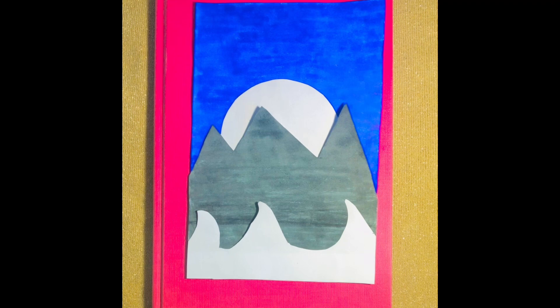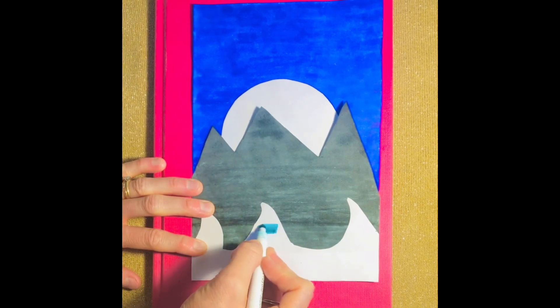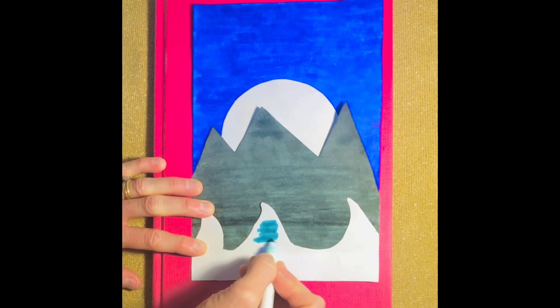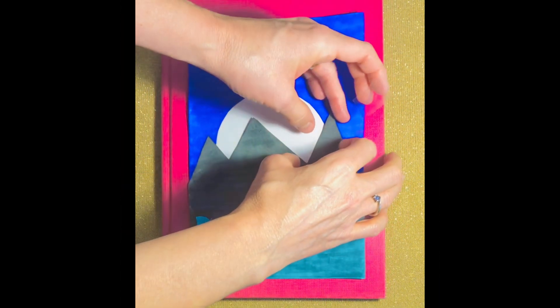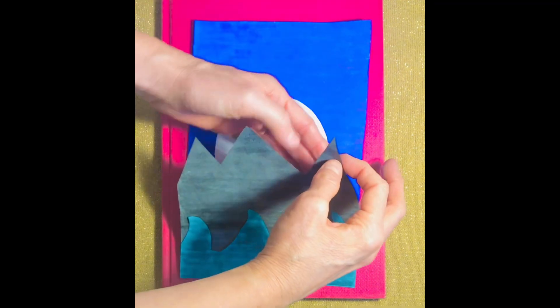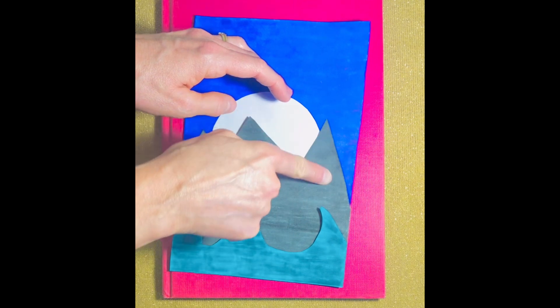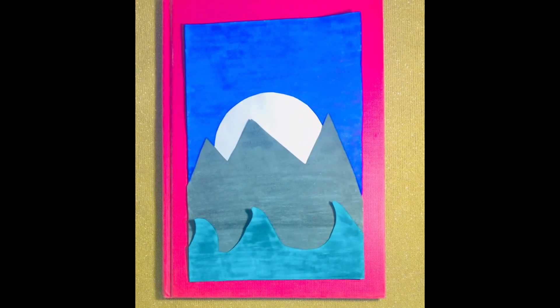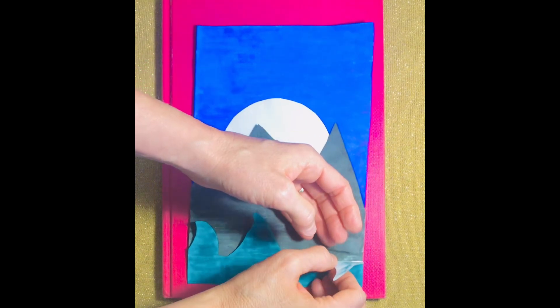I cut my waves out and I sized them to my paper and now I need to color them. I chose this beautiful turquoise for the color of my waves. And now I am taping down my mountains and my waves to make sure they are secure to my paper. You can also use glue, works just as well as the double-sided tape.